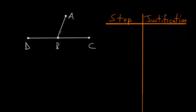So if we take the first case where each of these angles are equal to each other, we know by Definition 10 of Euclid's 23 definitions that two equal angles implies they are each right angles. And if they're both right angles, we know that the two lines are perpendicular. So in our first case, we do end up with two right angles.